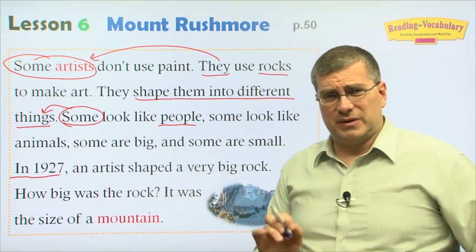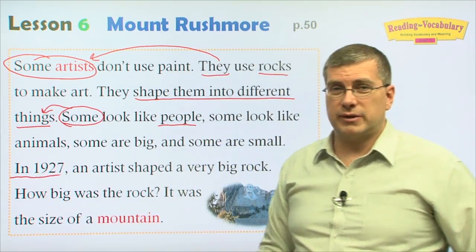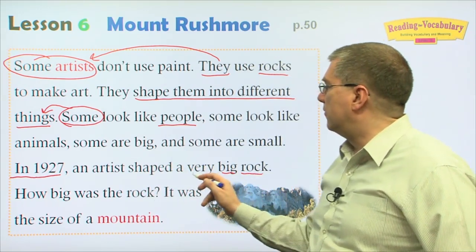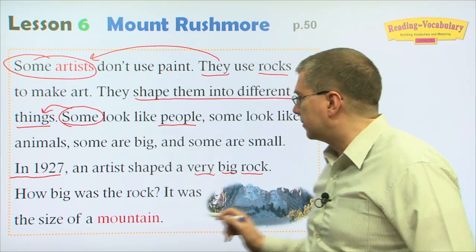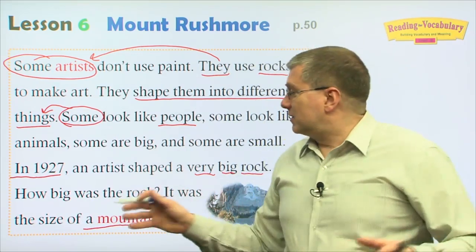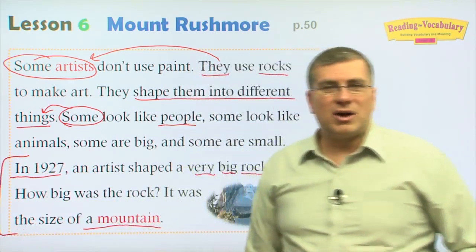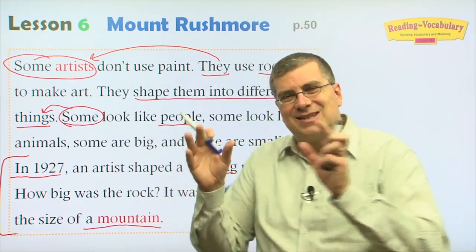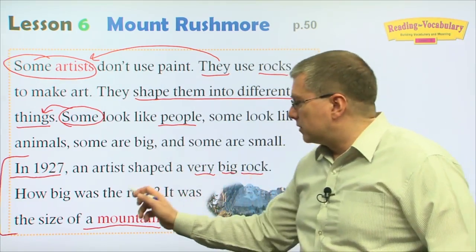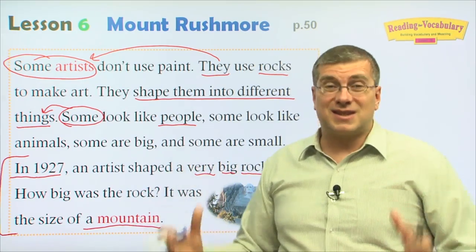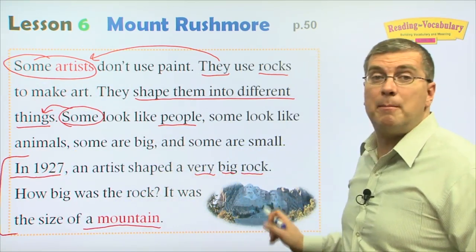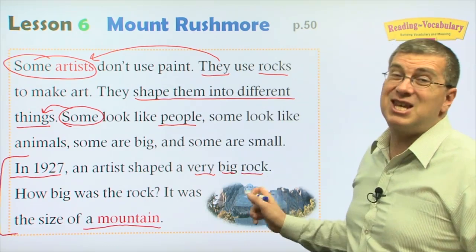In 1927 — almost 100 years ago — an artist shaped a very big rock. How big was the rock? It was the size of a mountain. This section starts to talk about Mount Rushmore — the date it was started, and also the size of the rock. The rock was really, really big, like the size of a mountain. It's a huge rock.